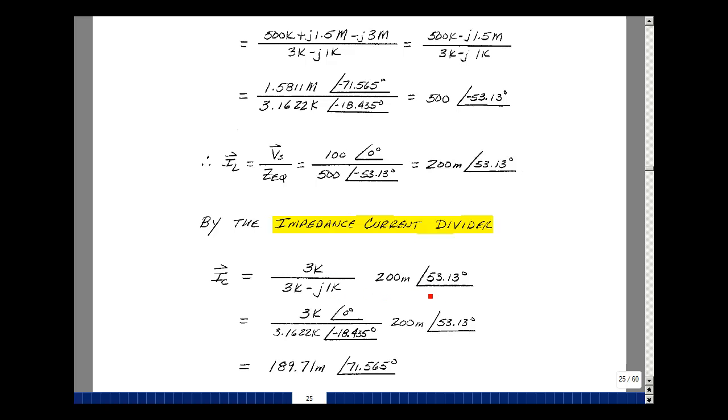This is really 3K at angle 0. We found this before. This is 3.1622K at minus 18.435. Okay, so we're going to add up these two angles and subtract this one.